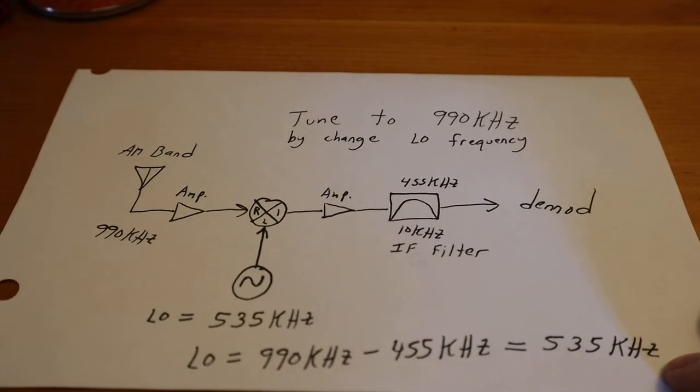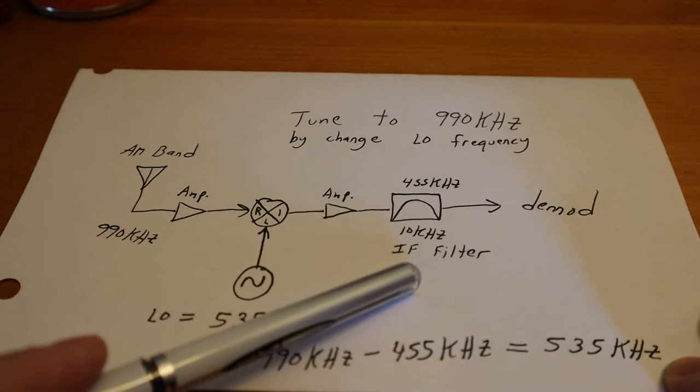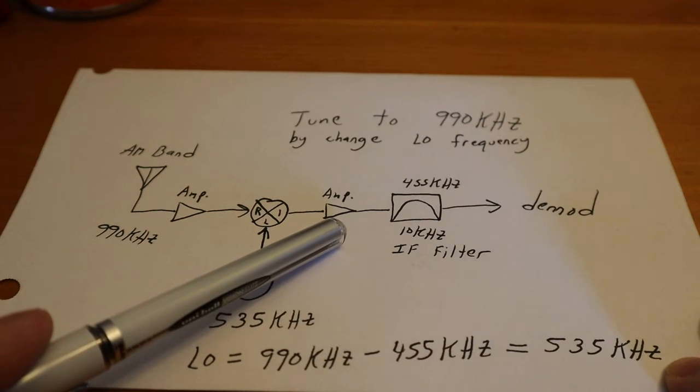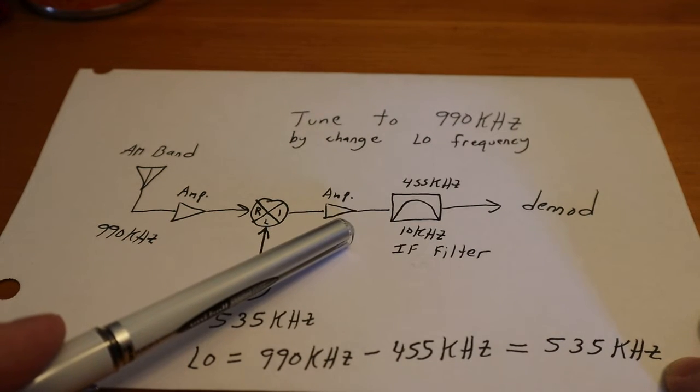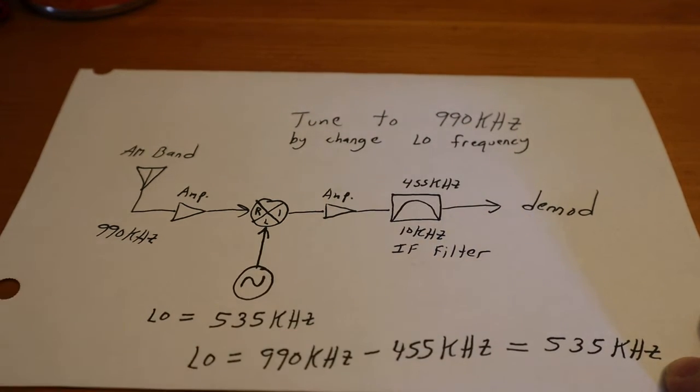So that's the purpose of IF frequency. So that we have a fixed filter, a fixed amplifier stage also in the IF frequency, and then it goes off to the D-mod.